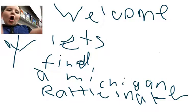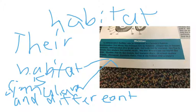Welcome. Let's find a Michigan habitat. This is their habitat. Their habitat is similar and different from humans. Rattlesnakes live out in the wild, but humans don't.